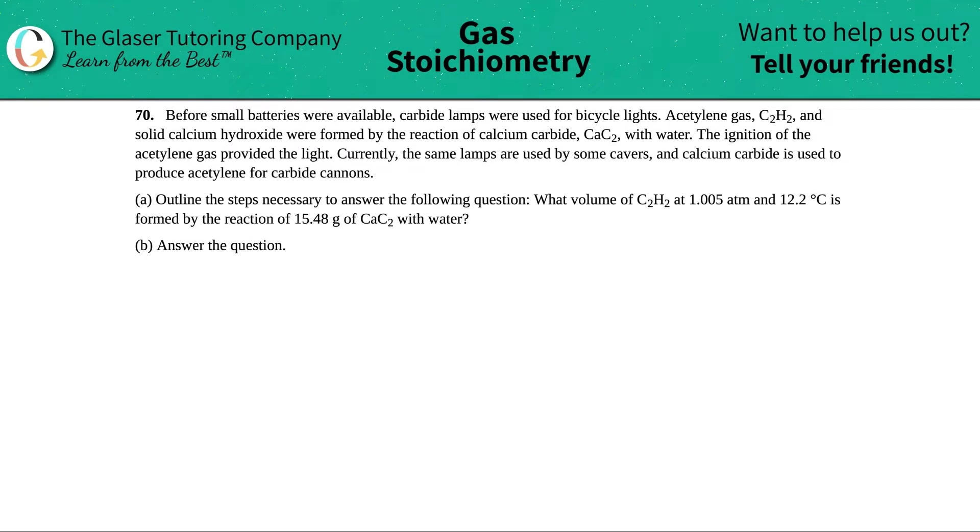Number 70. Before small batteries were available, carbide lamps were used for bicycle lights. Acetylene gas, which is C2H2, and solid calcium hydroxide were formed by the reaction of calcium carbide, which is CaC2, with water.